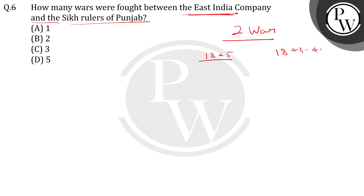British East India Company aur Sikh Samrajji ke sasakho ke bich mein 2 yudh lade gahe. The right answer of this question is option number 2. I hope aapko yeh concept clear huwa hoga.